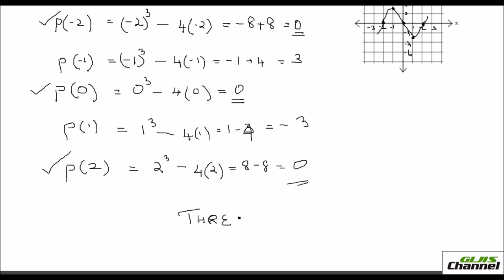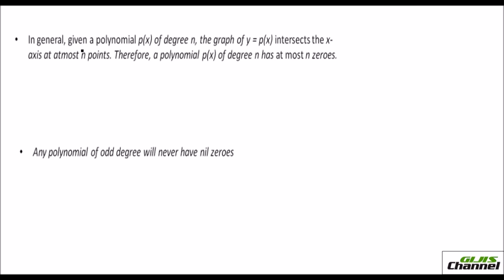Remember, for a cubic polynomial you can have either 1 zero, 2 zeros, or 3 zeros. To sum up in general: given a polynomial P of X with degree n, the graph of Y equals P of X intersects the X-axis at most n points. So if the degree is n, you will have n points where it cuts the X-axis. Therefore, a polynomial P of X of degree n has at most n zeros.